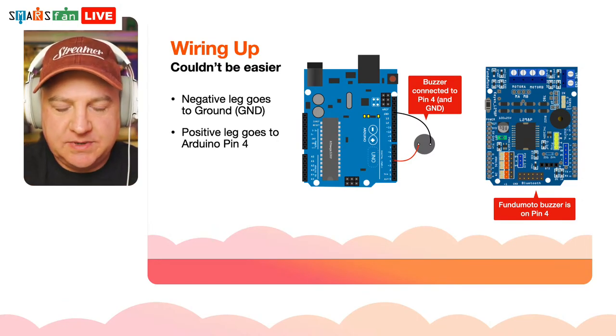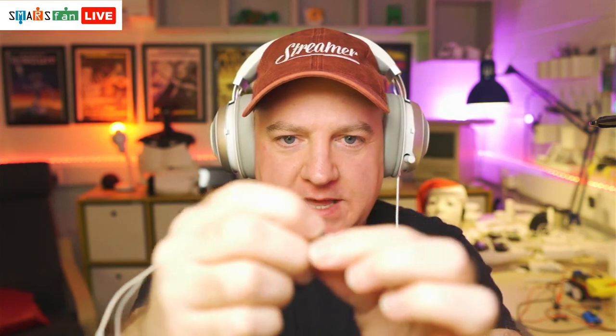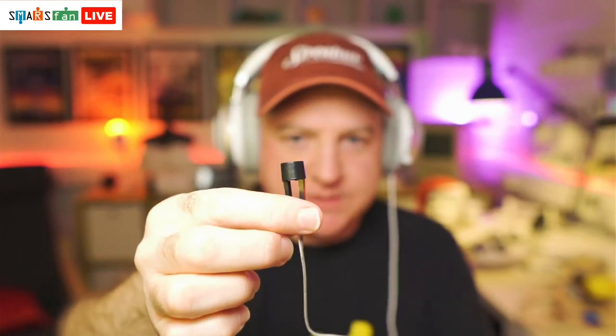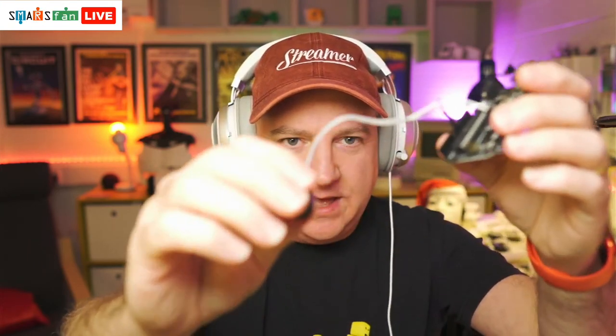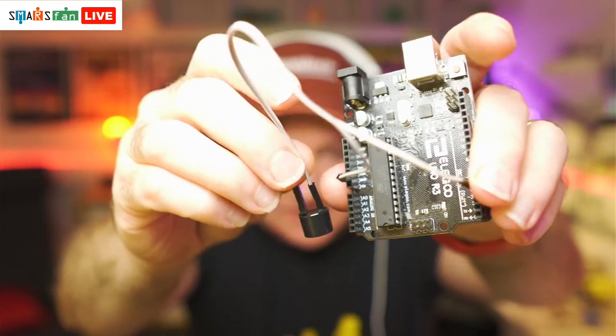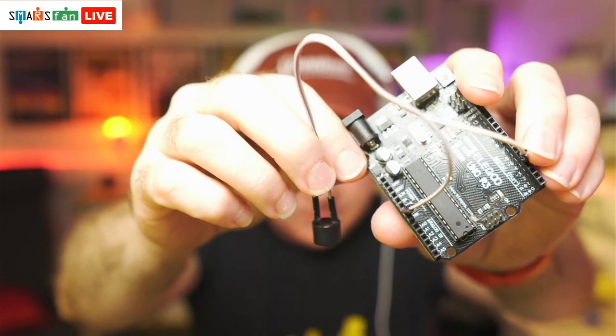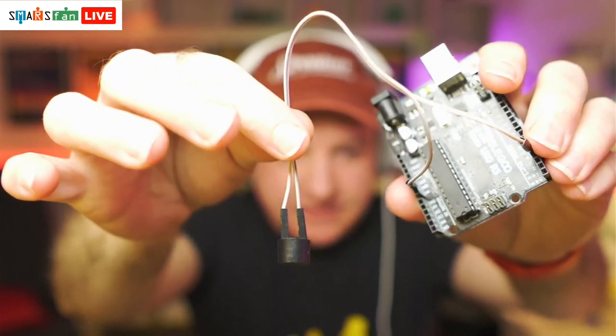I'm going to choose white for the longer leg, which is positive, and the negative will go to the shorter one. These dupont cables have female on one side and male on the other, and they simply go into the Arduino. Ground is easy — we can pick any ground pin. The positive one I'm going to plug into pin 4. That's it — the positive goes to pin 4, the negative goes to ground. Very simple.